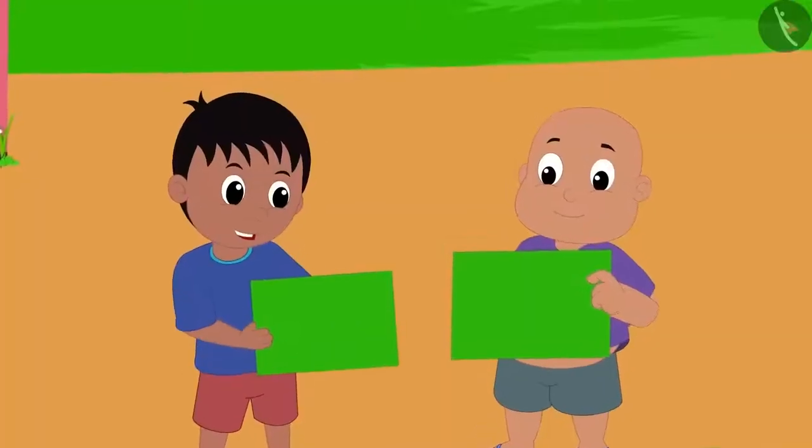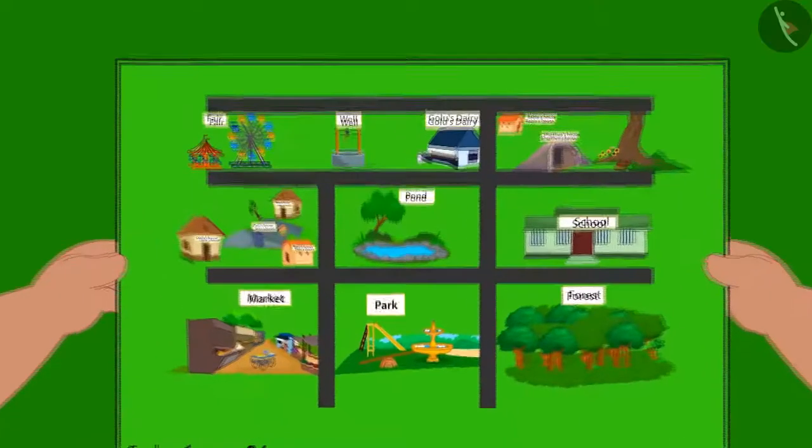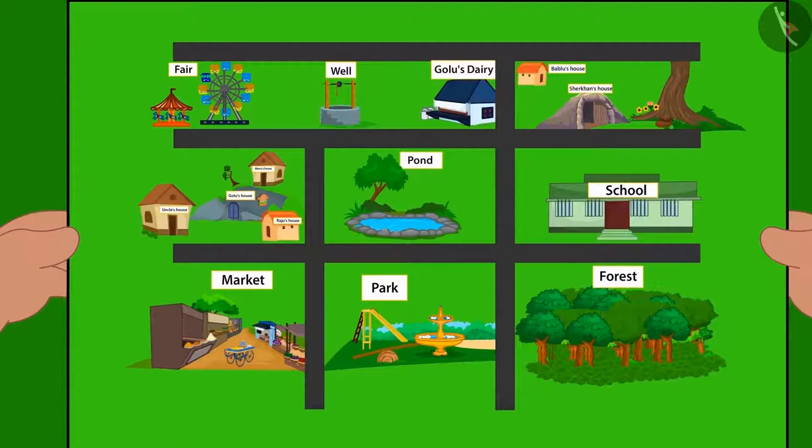Both Raju and Bablu started looking at their maps. Raju, how interesting is this map? With this, we can find the way to any place in our village.